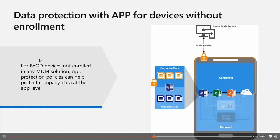With devices not enrolled in MDM, there are some limitations you need to be aware of. You can't deploy apps to the device automatically — the end user has to get the apps from the store and possibly purchase them. You can't provision certificate profiles on these devices, so if you want access to your wireless infrastructure you need another process. With an MDM solution like Intune, you can use the certificate connector and SCEP integration to deploy certificates directly on your devices — but then you need to be in a mobile device management scenario.